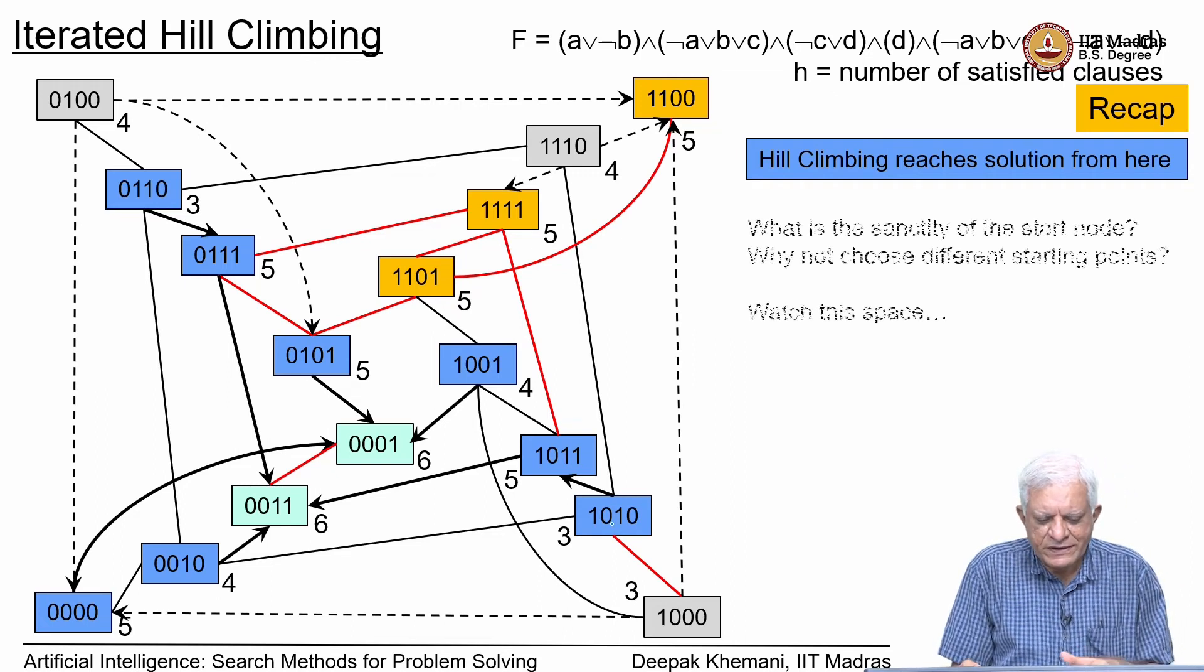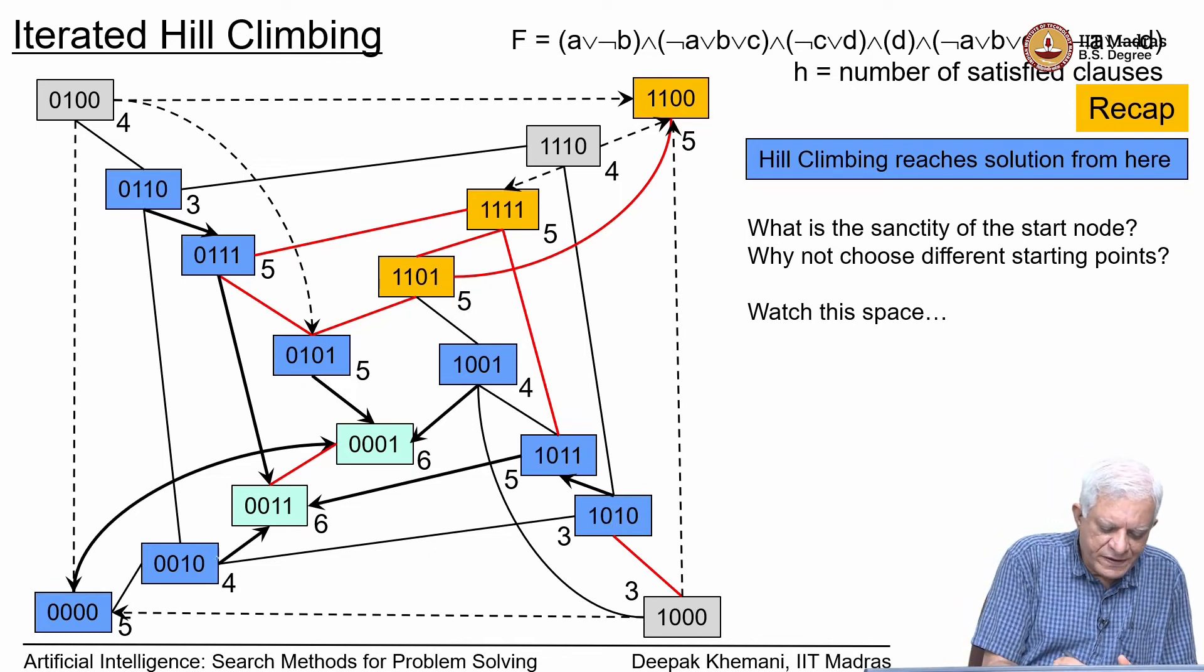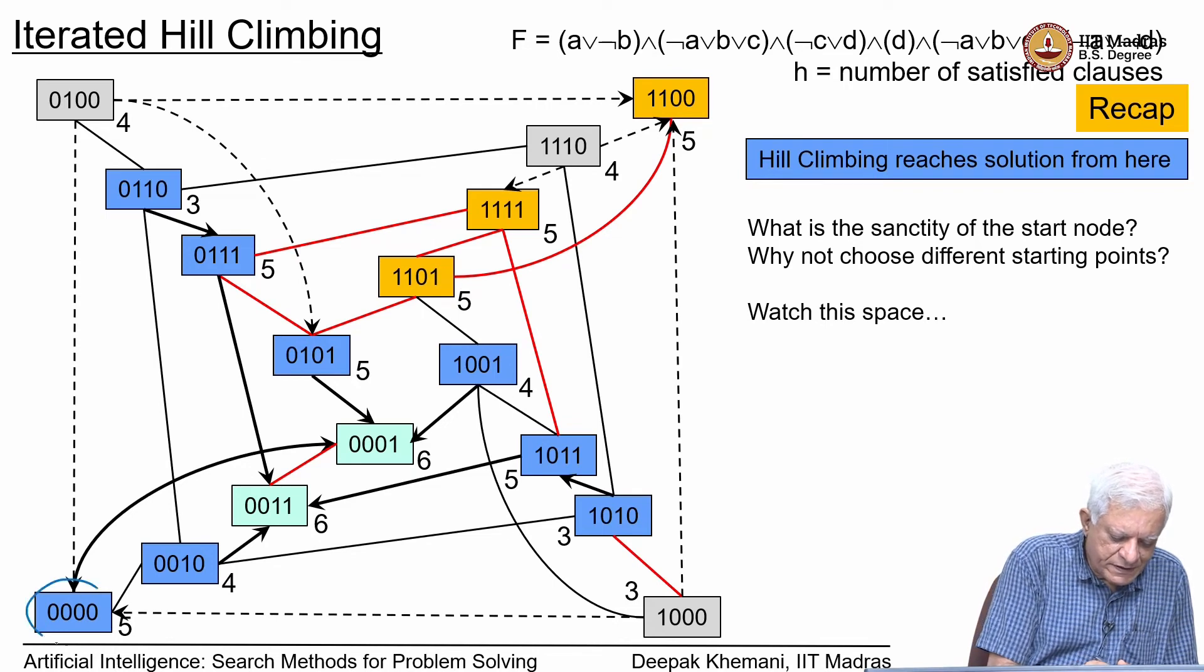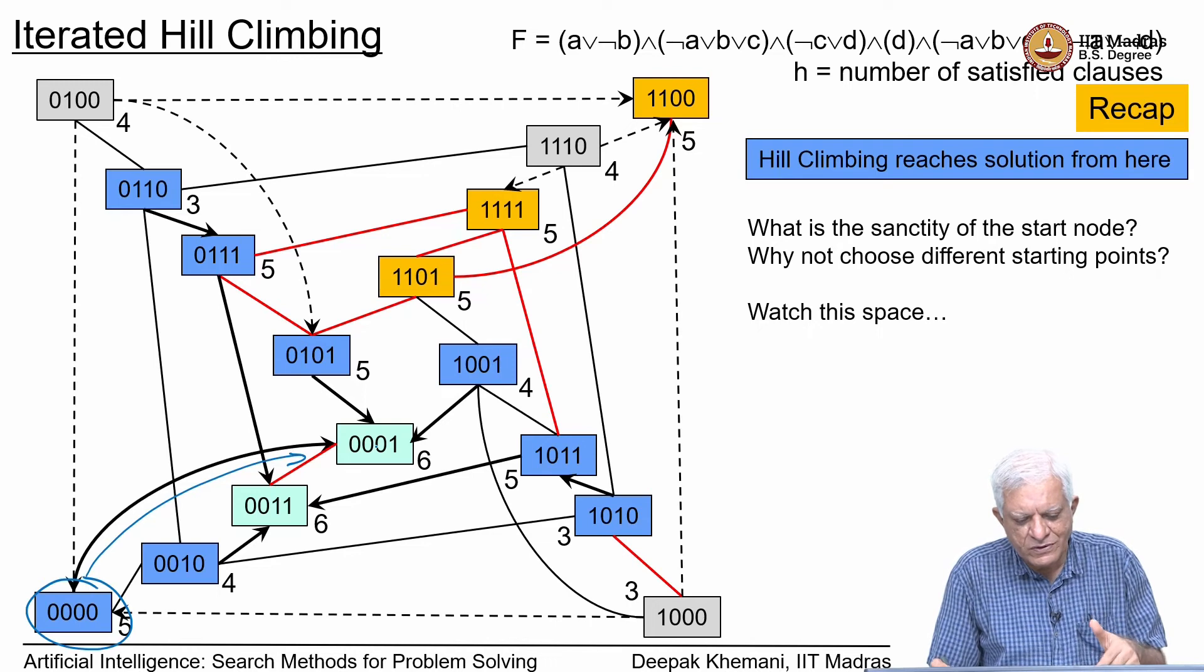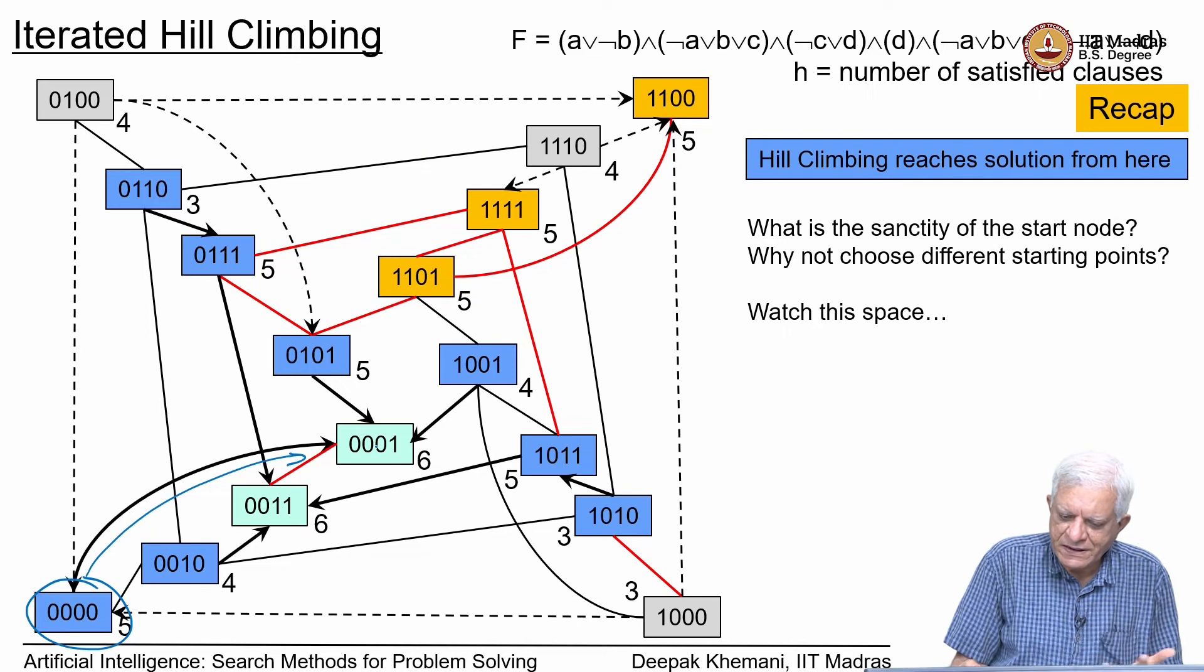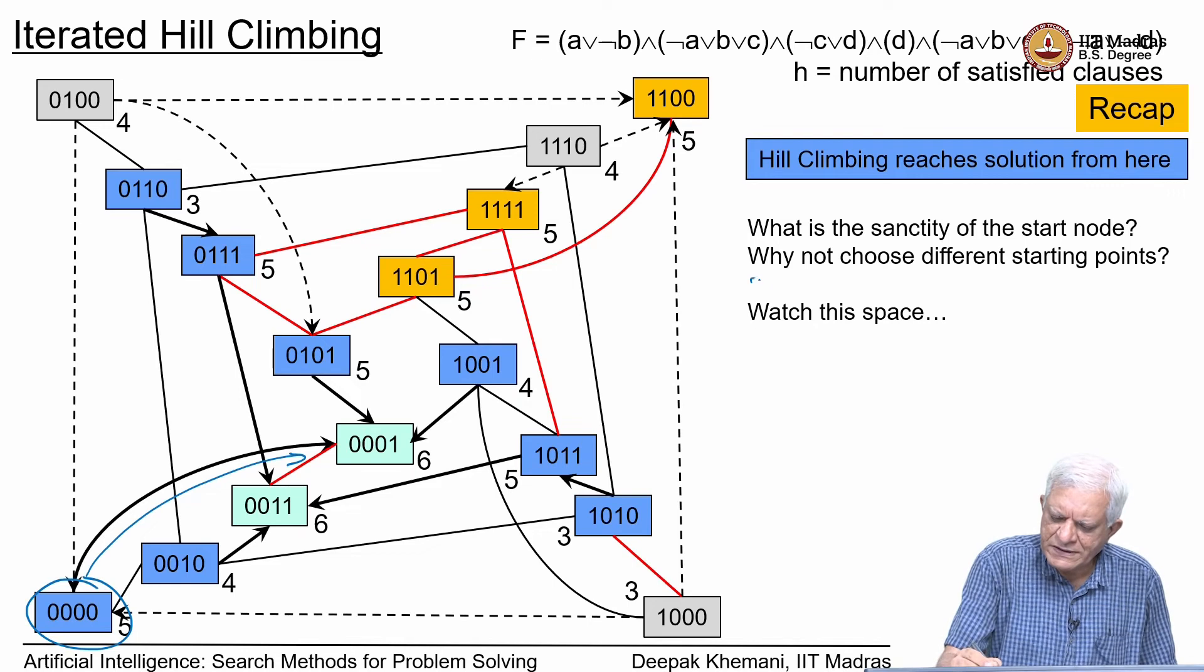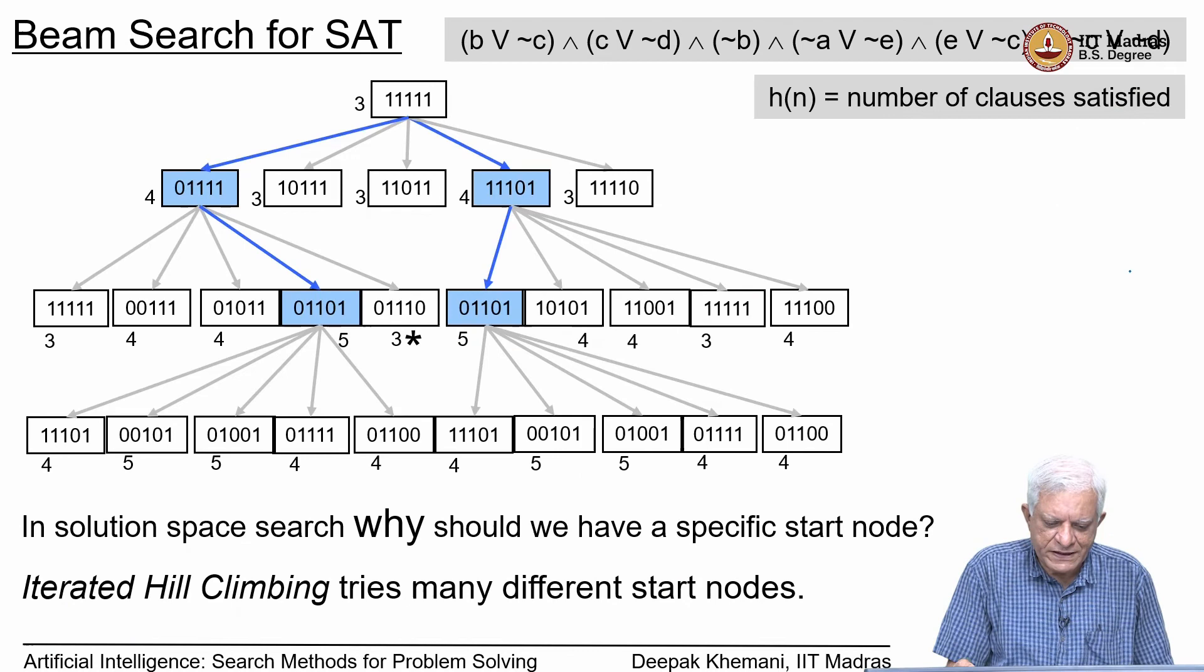We saw that on this small problem, the blue nodes are the ones from where, if you started, hill climbing would reach a solution. You can see that if you were to start from this node, then from this node you could go to this node, which is a solution. Likewise, for every blue node, you can reach a solution from there. Of course, you cannot reach a solution from the local maxima, because by definition, that is what we mean by the local maxima. The question that we asked was: why not choose different starting points?